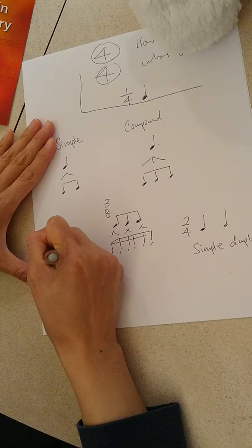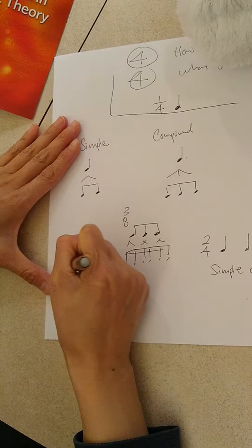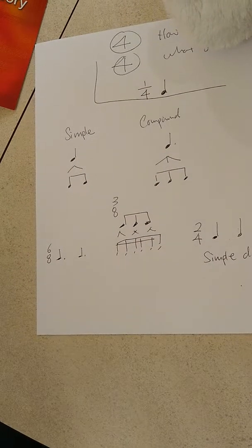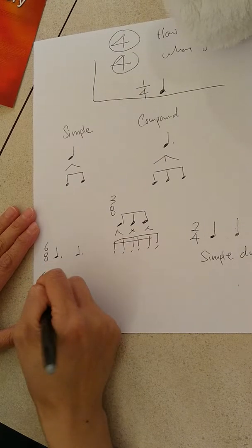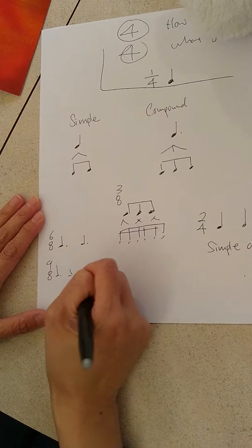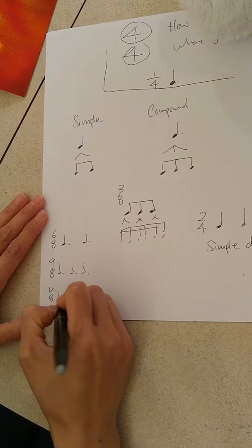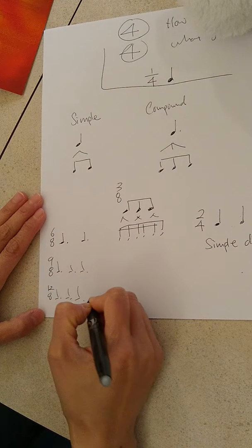Then in the compound family, you will have six eight. This is obviously going to be called compound duple. Nine eight compound triple. Twelve eight compound quadruple. Okay.